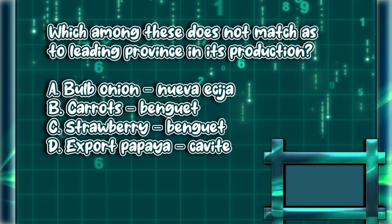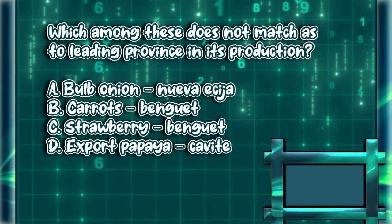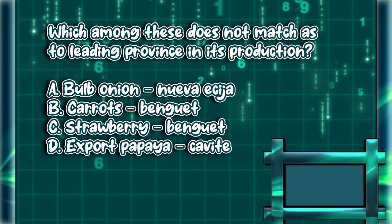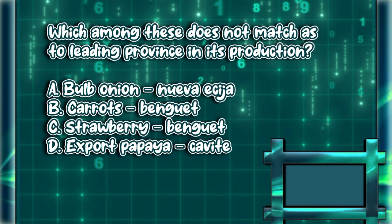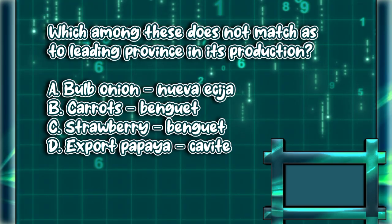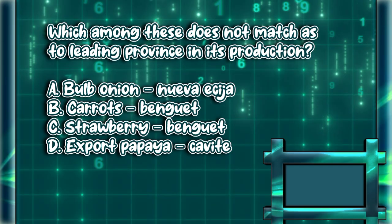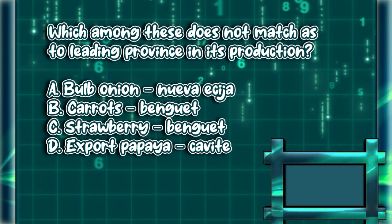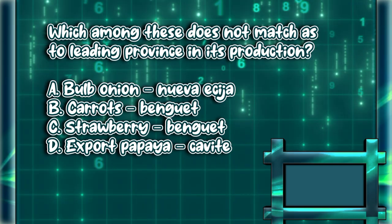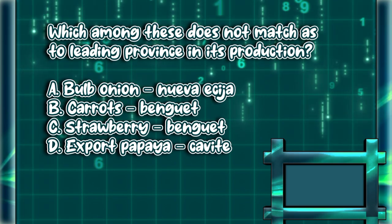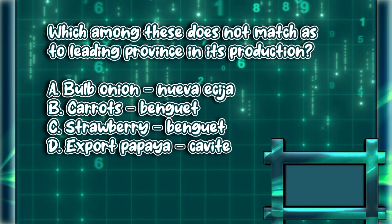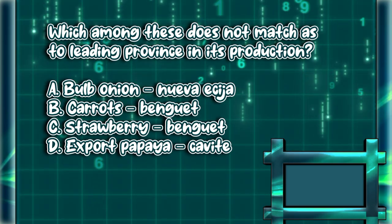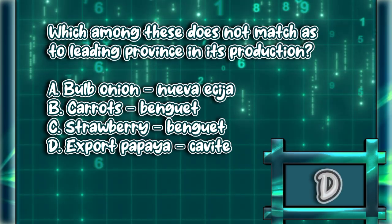Which among these does not match as to leading province in its production? A. Bulb Onion – Nueva Ecija. B. Carrots – Benguet. C. Strawberry – Benguet. D. Export papaya – Cavite. The answer is letter D.